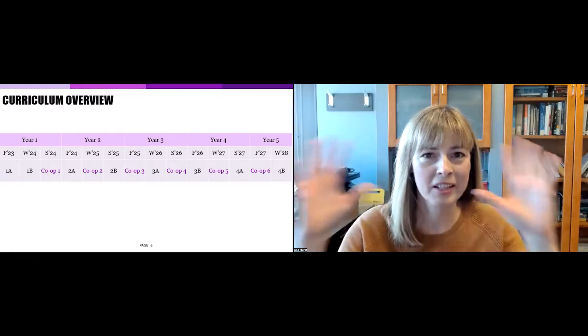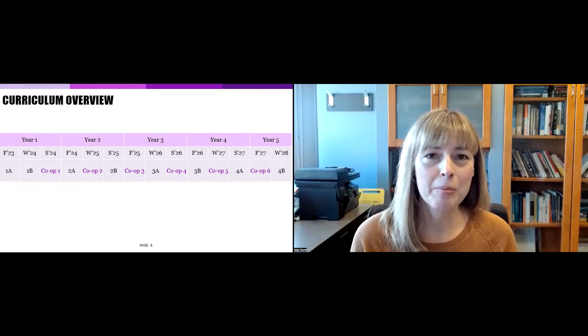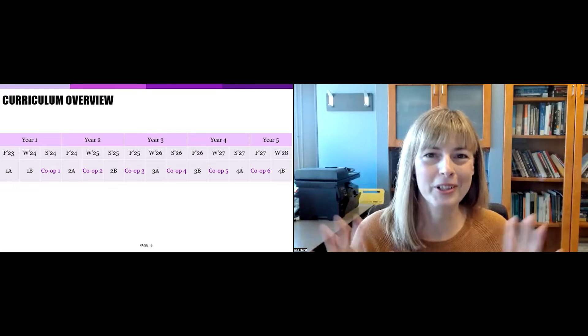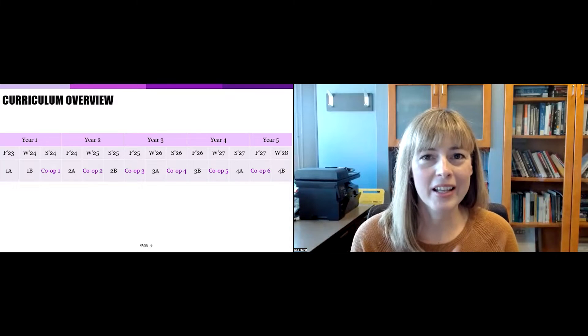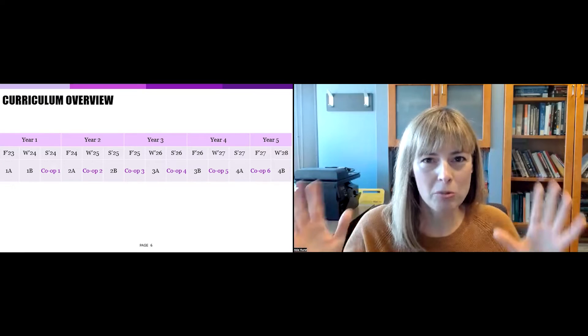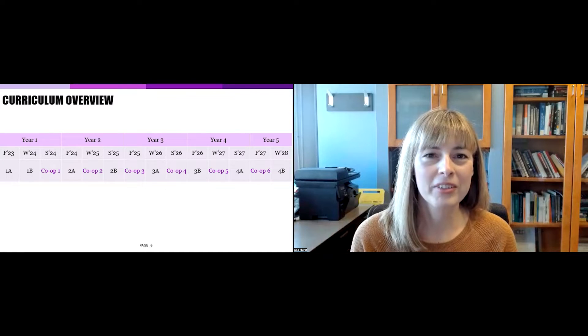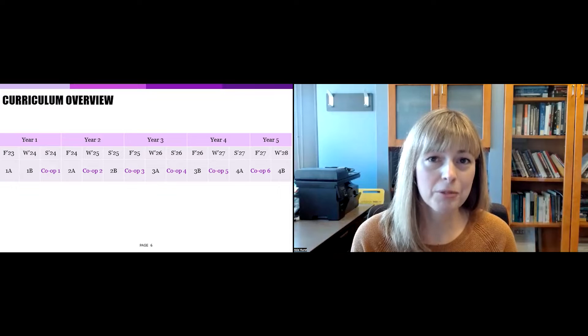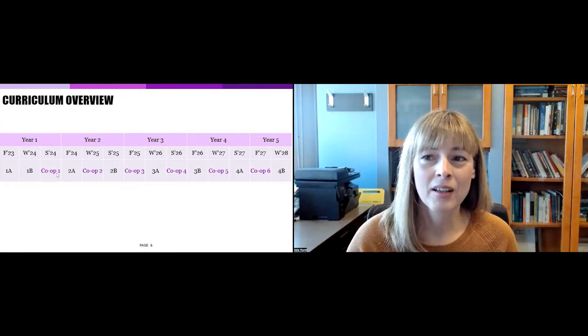So let's take a big picture view. The program is composed of 14 terms of four months each. This is the Waterloo Engineering way. And so that's eight academic terms and six co-op terms. So the program is almost five years in duration, but that includes two years of relevant paid work experience.